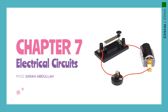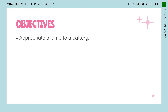Hello, Grade 7. So this week we are finishing Chapter 7, Electrical Circuits. This is the last lecture in this chapter. The only objective we're going to cover during this week's lecture is that you guys will be able to appropriate a lamp to a battery.